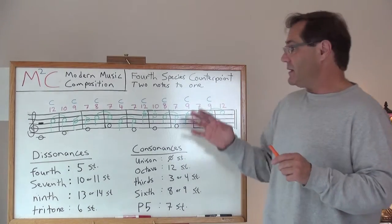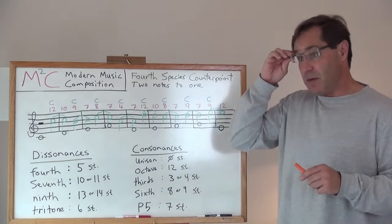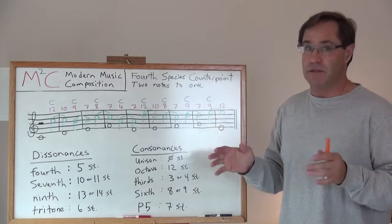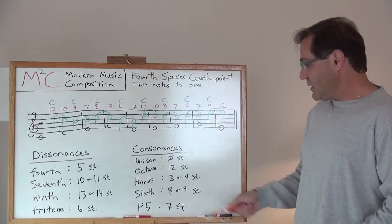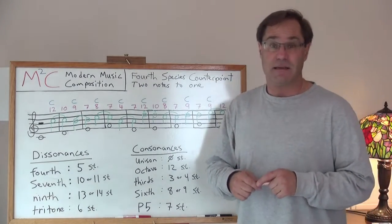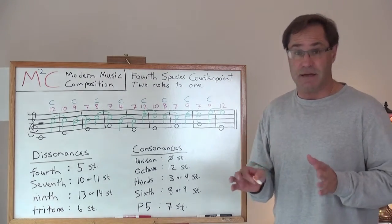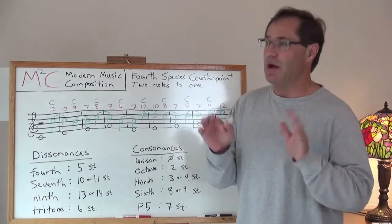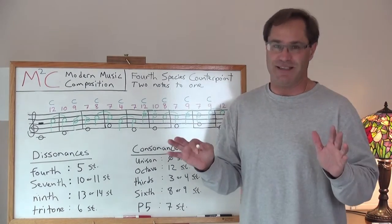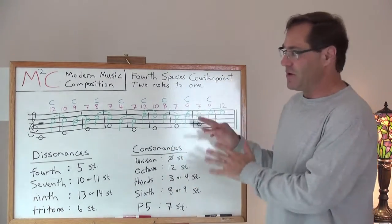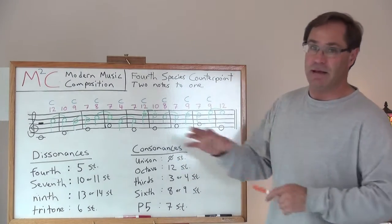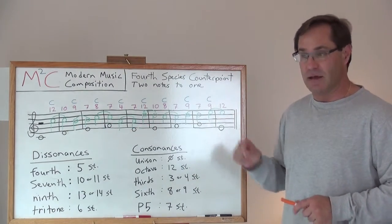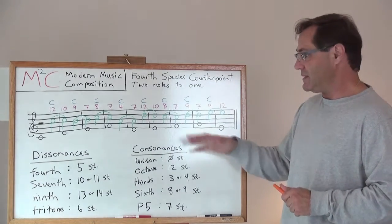Well, for the most part, especially when we're talking about Fourth Species Counterpoint, perfect fourths are considered dissonant. In fact, there are cases where perfect fifths are considered dissonant. But we're not going to go into all these nuances. You want to understand Fourth Species Counterpoint, and so I need to explain it at a nice level where it's easily understood.